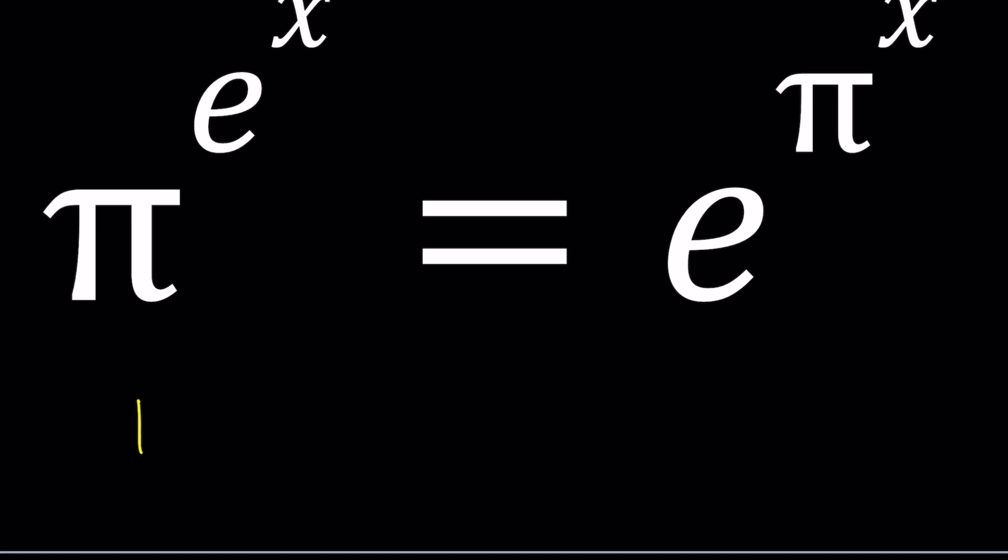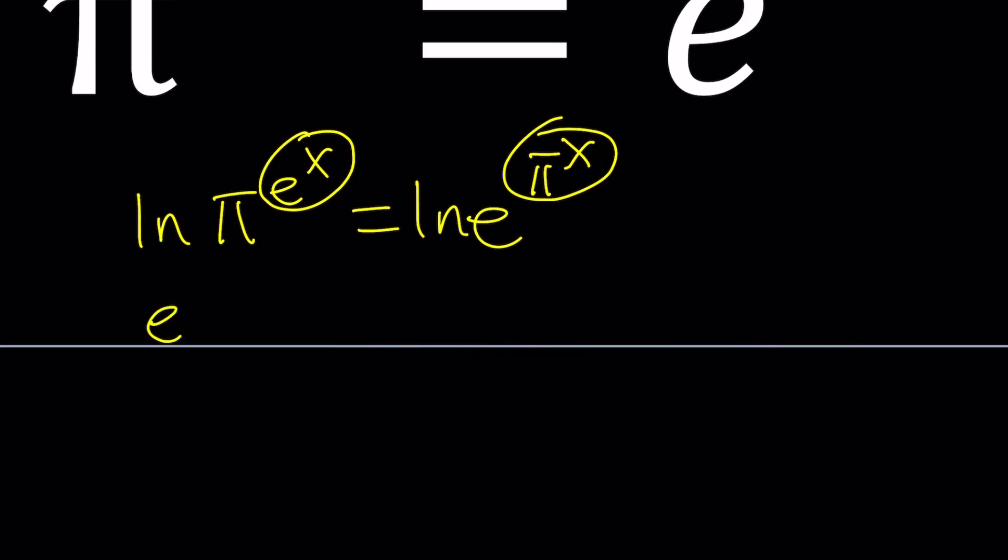I'm going to natural log both sides. That's going to bring the exponents down. In this case, we're going to get e to the x ln π equals π to the x ln e.